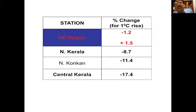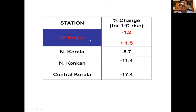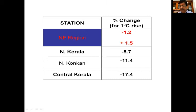Based on realized yield data from the field and mathematical modeling using existing data, we can see how productivity was affected when temperature rose by one degree centigrade. In northeastern regions, when temperature rose by one degree centigrade, there was hardly any reduction in productivity. Whereas in traditional regions like central Kerala, a unit degree increase in temperature resulted in a substantial reduction in productivity.